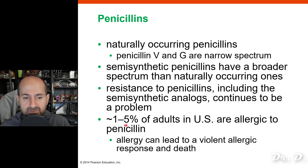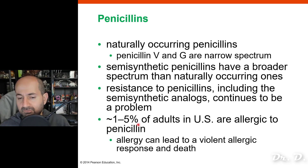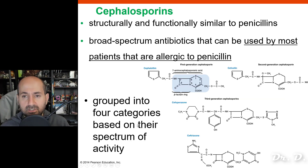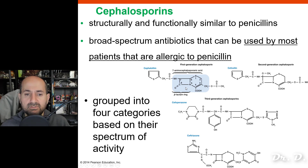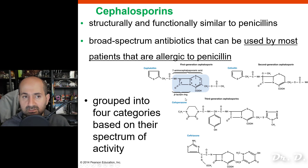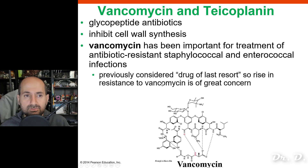Penicillins can cause allergic reactions, and as a healthcare provider you need to be careful before prescribing them. Luckily, cephalosporins are very similar to penicillins functionally and are prescribed for people who are allergic to penicillins. They act the same way and even have the same beta-lactam ring. Vancomycin and teicoplanin are other examples of cell wall synthesis inhibitors — more rarely used but very potent antibiotics.